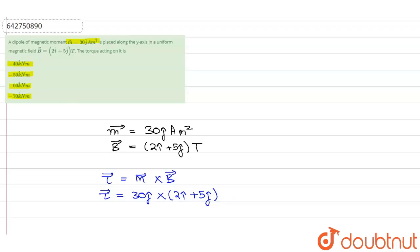Now, if this is the cross product, then you can see that this could be written into this form as this could be written as 60 j cap cross i cap plus 150 j cap into j cap.